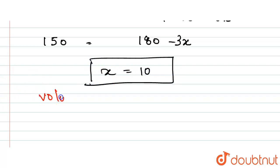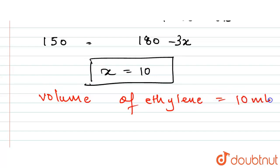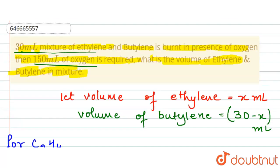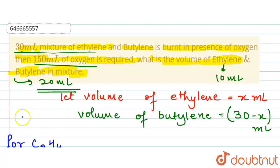Since x = 10, the volume of ethylene is 10 ml. The volume of butylene is 30 − x = 30 − 10 = 20 ml. So the required answer is: ethylene = 10 ml and butylene = 20 ml. Thank you.